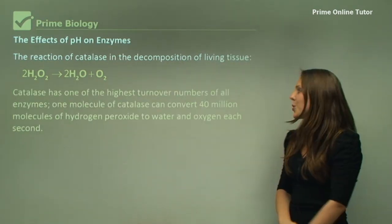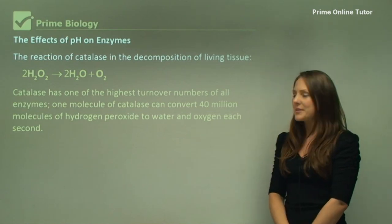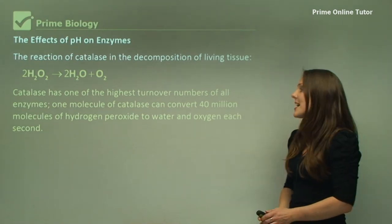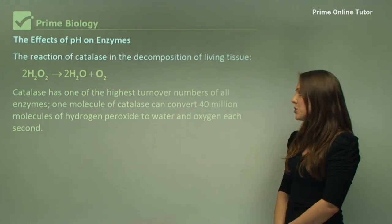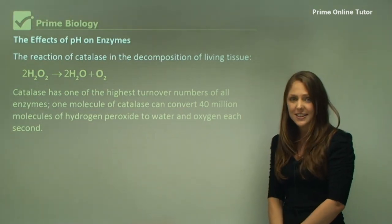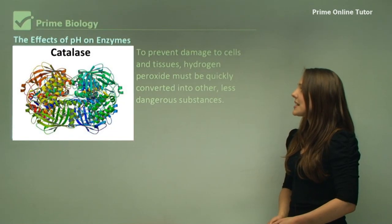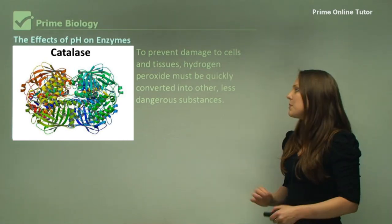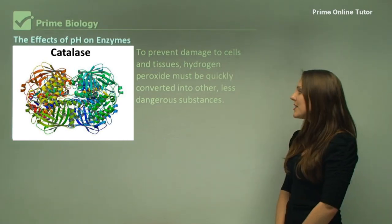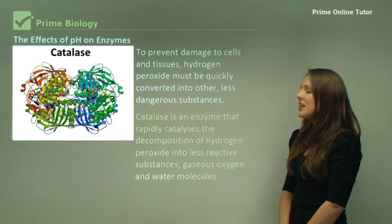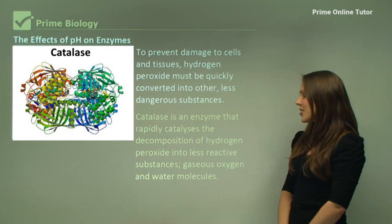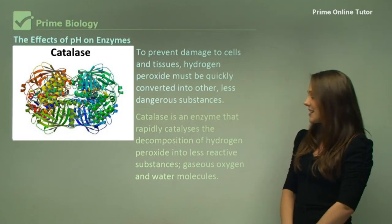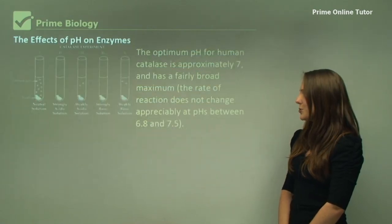Catalase is one of the highest turnover numbers of all enzymes. One molecule of catalase can convert 40 million molecules of hydrogen peroxide to water and oxygen each second. To prevent damage in cells and tissues, hydrogen peroxide must be quickly converted into other less dangerous substances. Catalase rapidly catalyzes the decomposition of hydrogen peroxide into less reactive substances such as gaseous oxygen and water molecules.